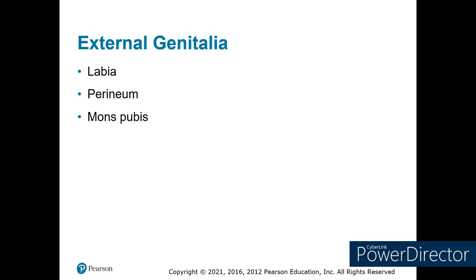The external genitalia consists of the labia, which are protective flaps of skin over the vaginal opening. You have the perineum, the skin between the vaginal opening and the rectal opening. And then you have the mons pubis, the skin that covers the front of the pelvis bone directly above the vaginal opening.